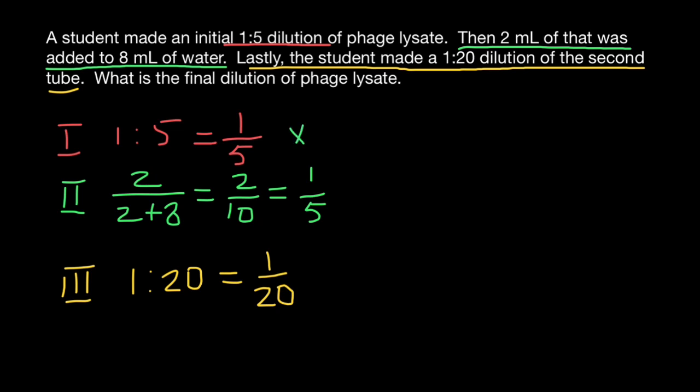So 1 fifth times 1 fifth, which comes from here, and times 1 over 20, which comes from here. So 1 fifth times 1 fifth is going to be 1 over 25 times 1 over 20.